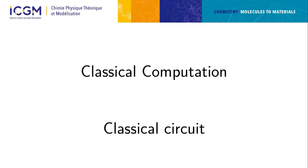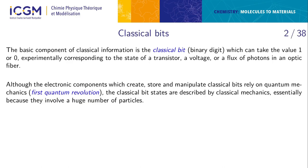Moving to classical computation: all information is stored and manipulated with classical bits — binary digits that can take values zero or one. Experimentally, this is done through the first quantum revolution using transistor states, voltage, or photon flux. Although it uses quantum revolution components, the information remains classical because it involves a huge number of particles — microscopic effects — so quantum effects are lost.